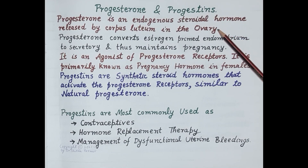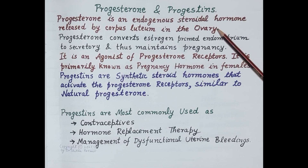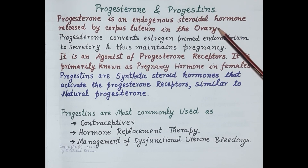Progesterone is an endogenous steroidal hormone. 10 to 20 milligrams per day of progesterone is produced in women from the corpus luteum in the ovary. Around 1 to 5 milligrams of progesterone is produced in men from the adrenal glands and testes; however, its function in men is not known.